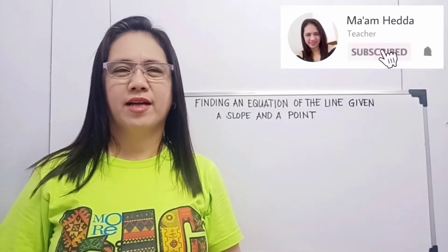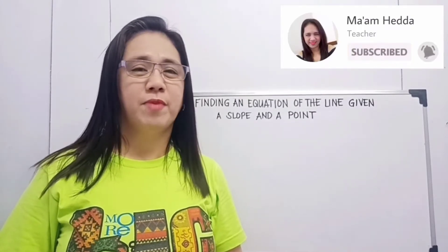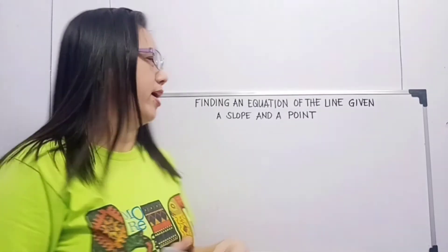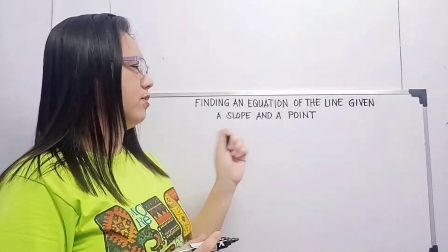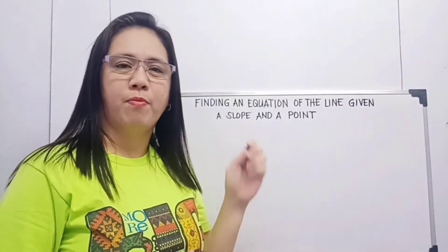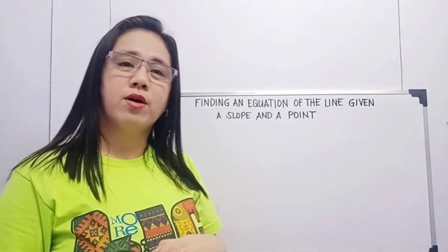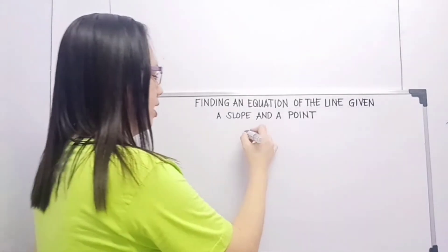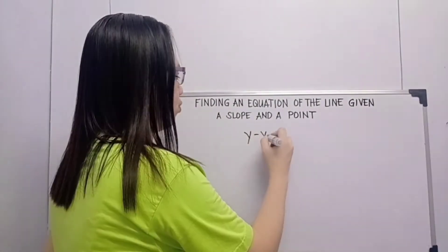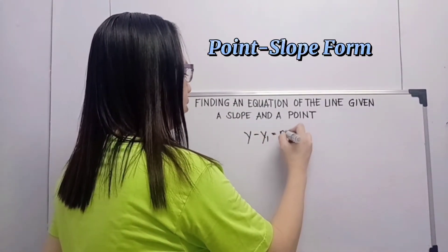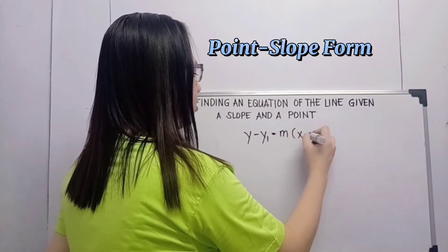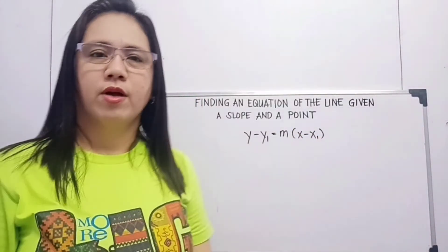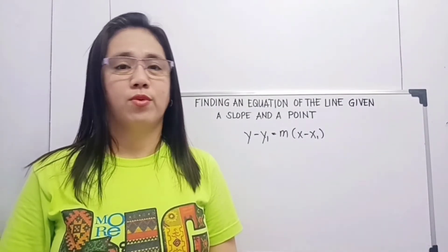Hello everyone! Welcome back to my channel. This is my continuation in our equation of the line. So we are going to find an equation of the line given a slope and a point. So what we are going to use is the point-slope formula, which is y minus y sub 1 is equal to m times the quantity x minus x sub 1.